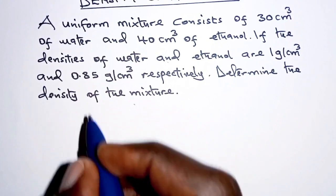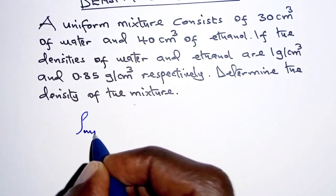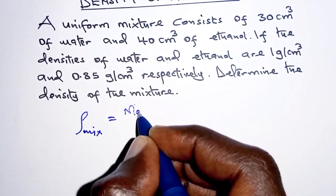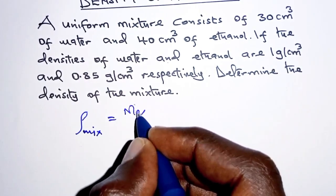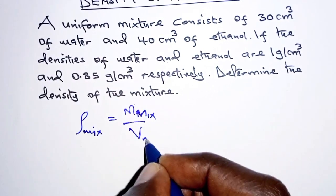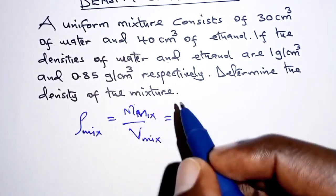The first thing we need to note is that in order to calculate the density of the mixture, we simply have the mass of the mixture over the volume of the mixture, and this will be obtained as follows.